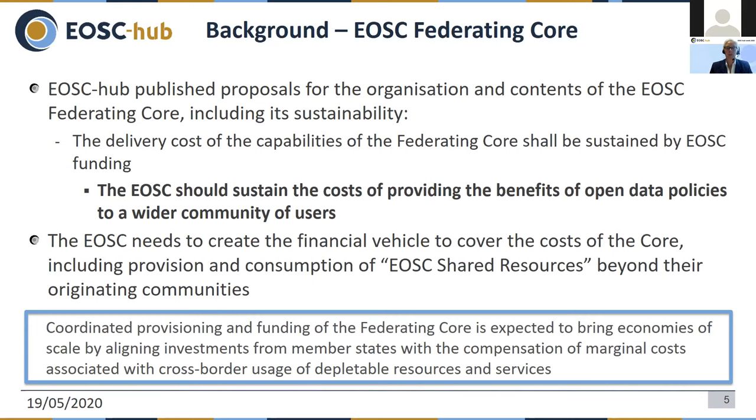On the next slide there are examples of what we call shared resources. The first example is high-performance European distributed cloud storage environments for secure access, staging, downloading and deposition of large volumes of data across national, institutional and research infrastructure boundaries. The second example is high-performance, high-throughput distributed compute capabilities for big data processing and analysis, including simulations.